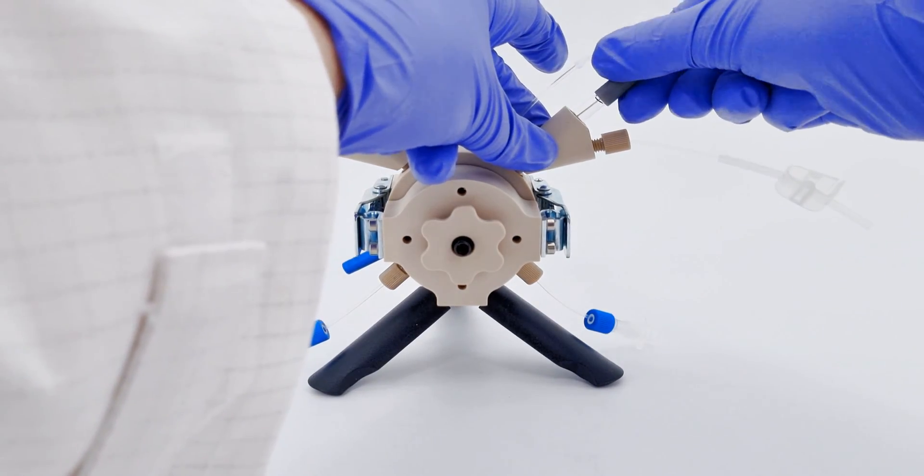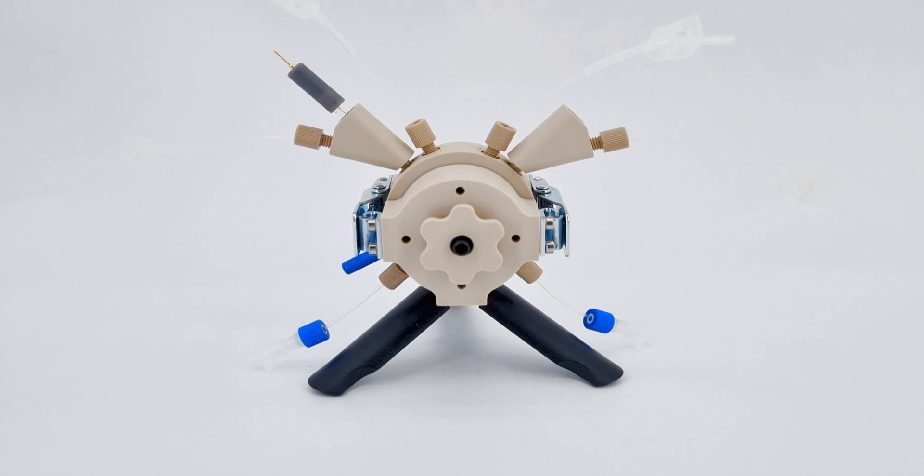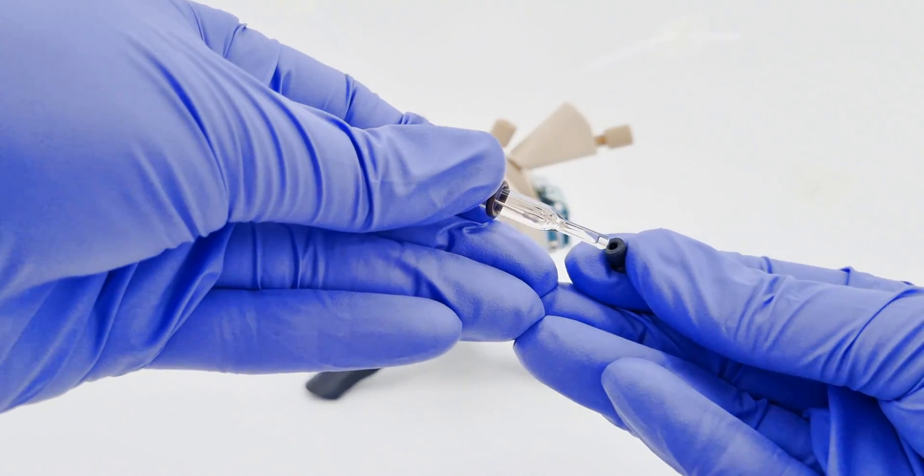To remove the reference electrodes, apply a gentle twisting and pulling motion. Once removed, clean the electrode and promptly replace its cap. This ensures the integrity and cleanliness of the electrode.